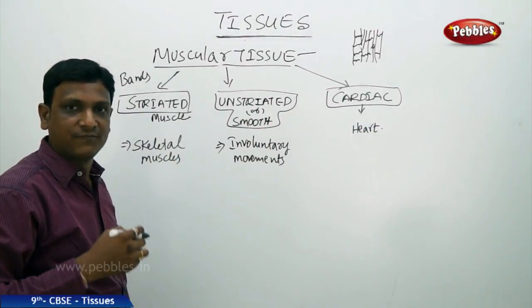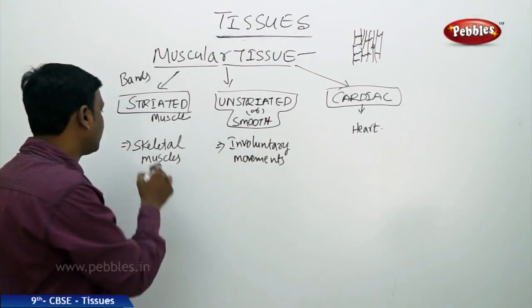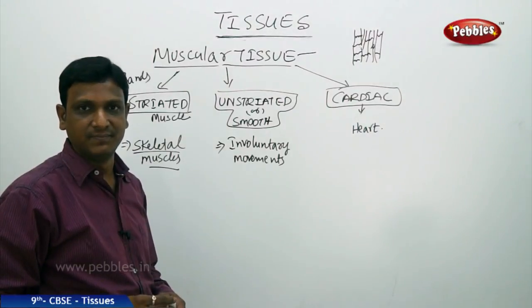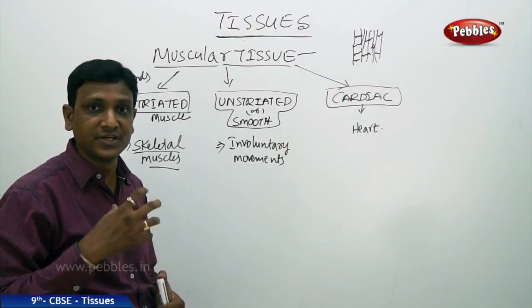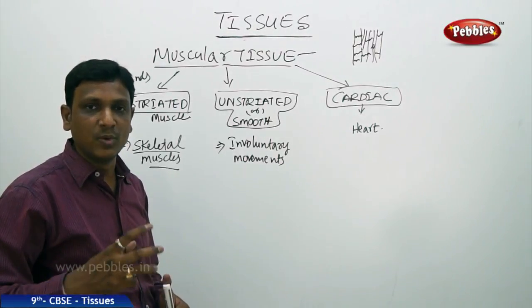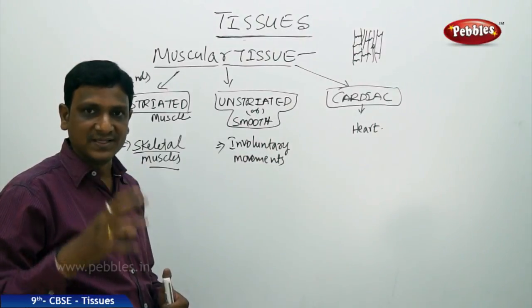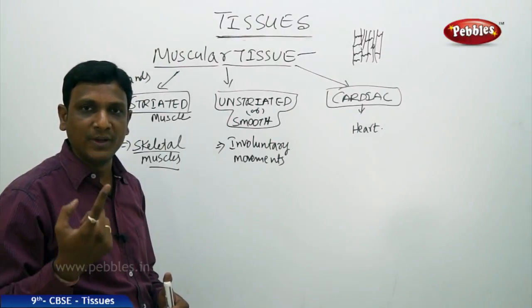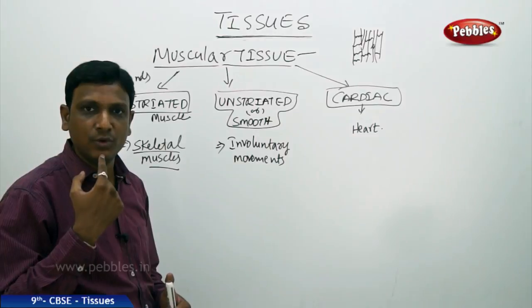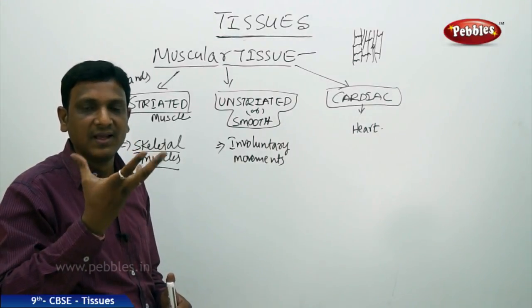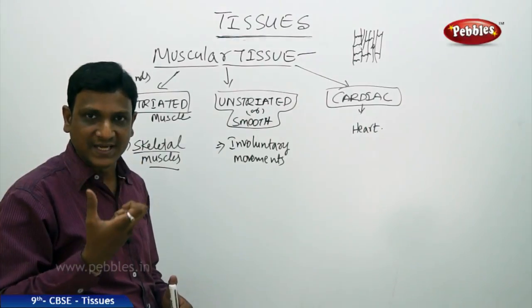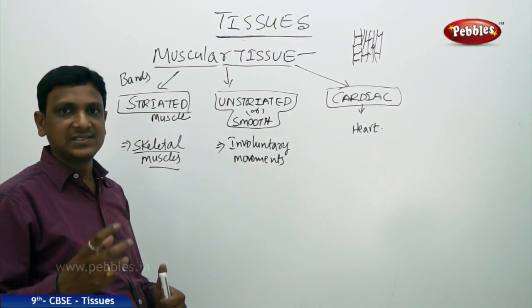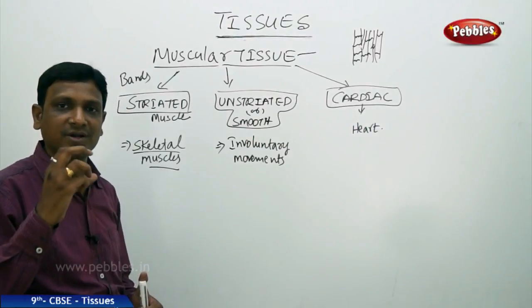Striated muscles are found in the skeletal muscles — the muscles connected to the skeleton that help in voluntary movements. Voluntary movements are movements under our control. All the muscles in your hands, legs, and jaw are examples. When you open your mouth, muscles expand and contract. Muscles are able to contract and relax because of contractile proteins.